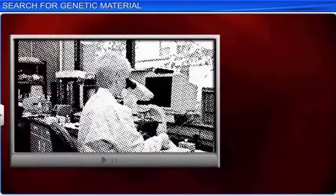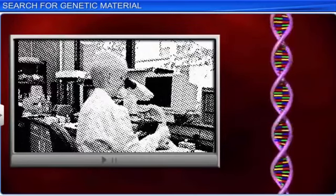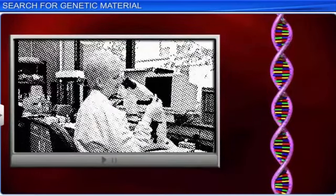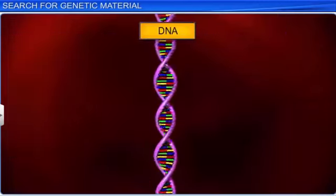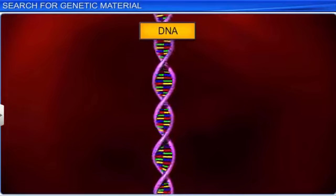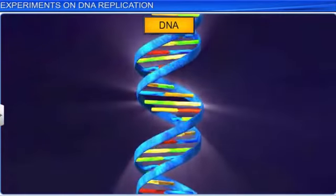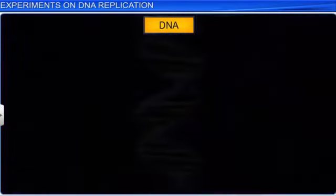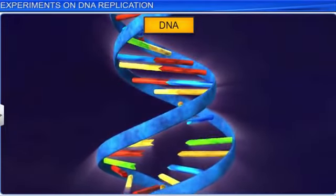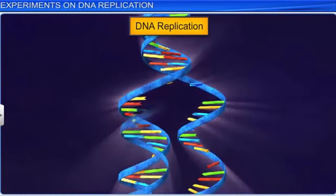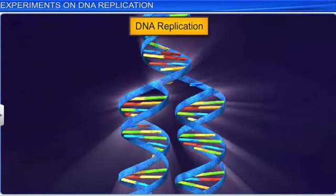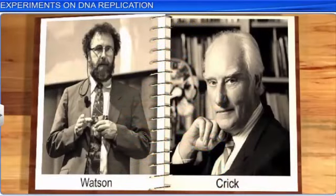Nevertheless, many biologists were still unconvinced that DNA is the hereditary material. And so the search for genetic material continued for several years and was concluded with the discovery of DNA. Once it was proved that DNA was the primary genetic material in the living system, it was natural to conclude that DNA replicates as a molecule. Scientists Watson and Crick, who in 1953 had proved that DNA had a double helical structure, had also suggested a probable scheme for the replication of DNA.